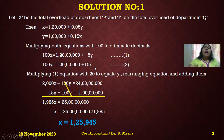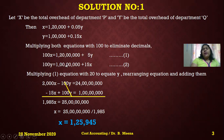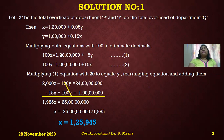Rearranging, x terms come to the left side. In equation one, 5y moves to the left giving minus 5y: 100x − 5y = 1,20,00,000. In equation two, 15x moves left: −15x + 100y = 1,00,00,000. To eliminate y, I multiply equation one by 20 so that minus 5y becomes minus 100y, which cancels with the plus 100y in equation two.